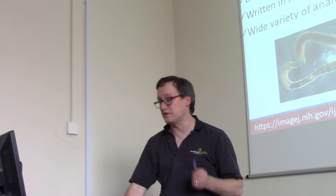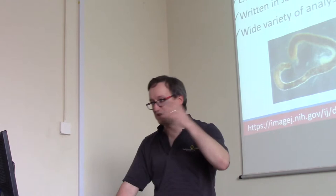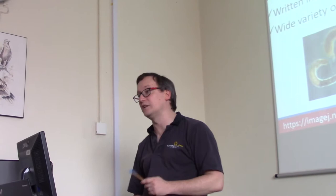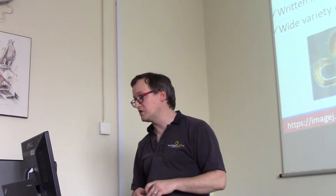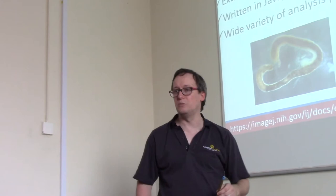ImageJ is the software we worked with this morning. It's an extremely popular toolkit, it's free, the source code is all available, and because it's written in Java you can run it more or less anywhere with the same modules. It's highly extensible, with lots of plugins available, many funded by NIH. For example, if you want to know how long a worm is, you can trace its outline and evaluate the length by uncurling it.